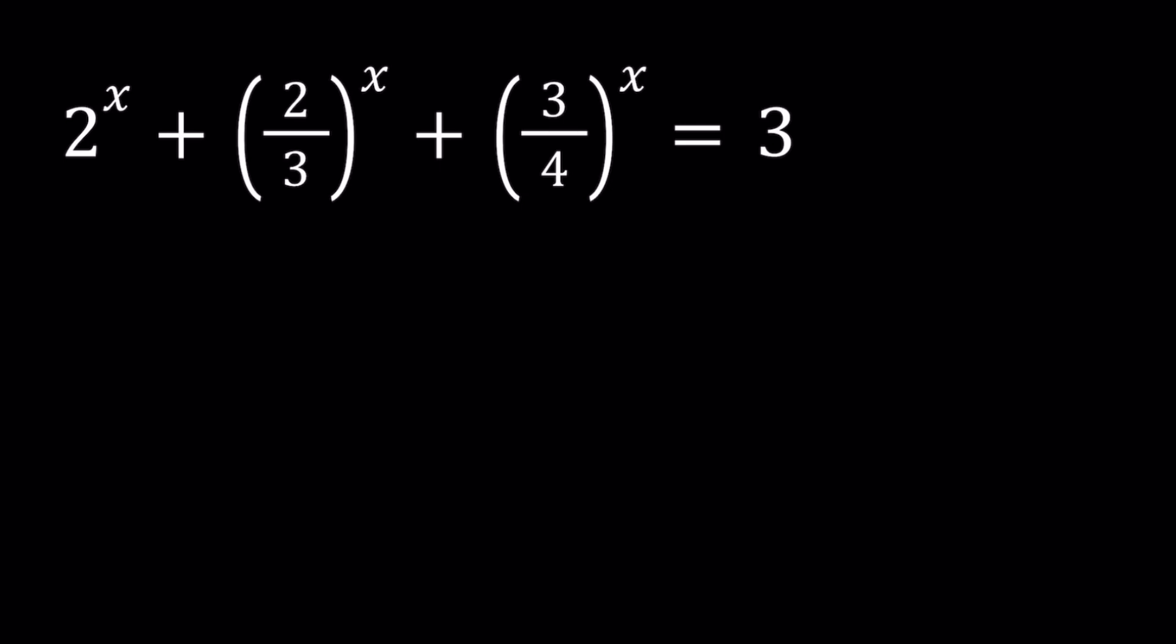But let's use what is called the AM-GM inequality. The AM-GM inequality works like this with three numbers: if you have a, b, c that are non-negative, the arithmetic mean, which is the average of these three numbers, is always greater than or equal to the geometric mean of these numbers, which is the cube root of their product.